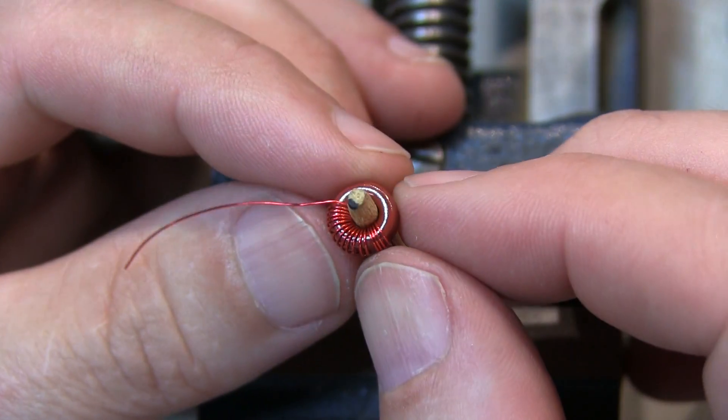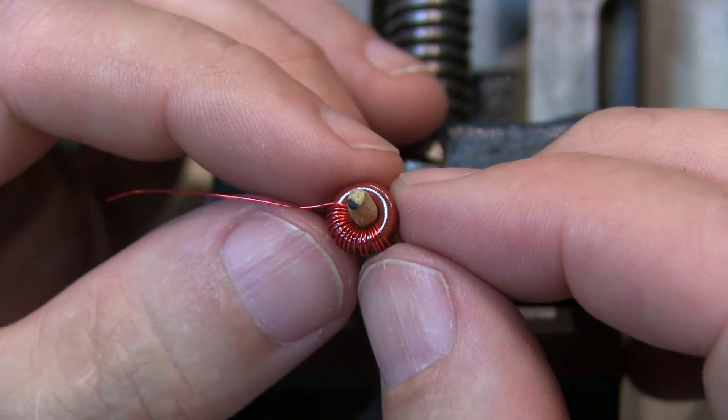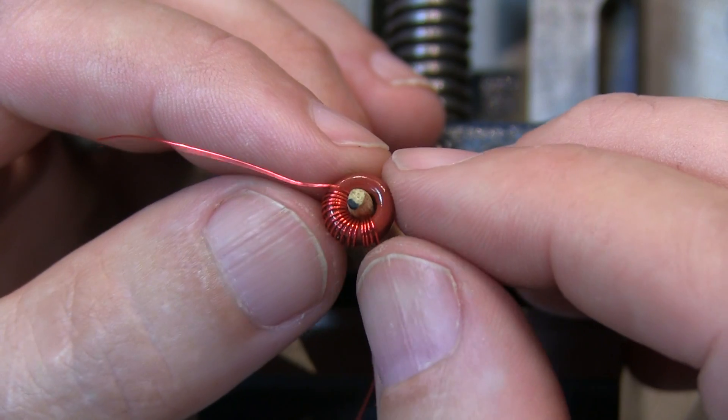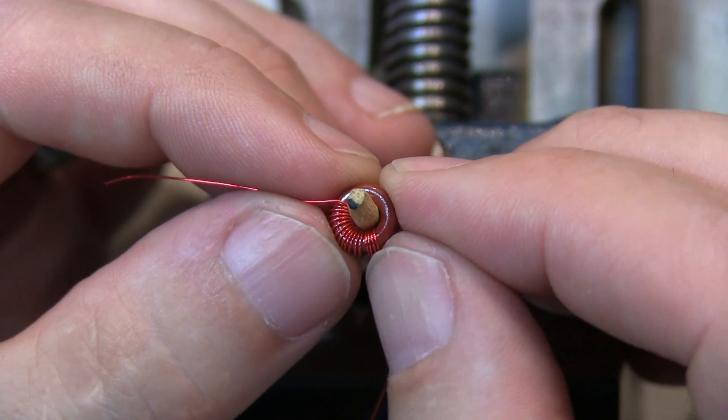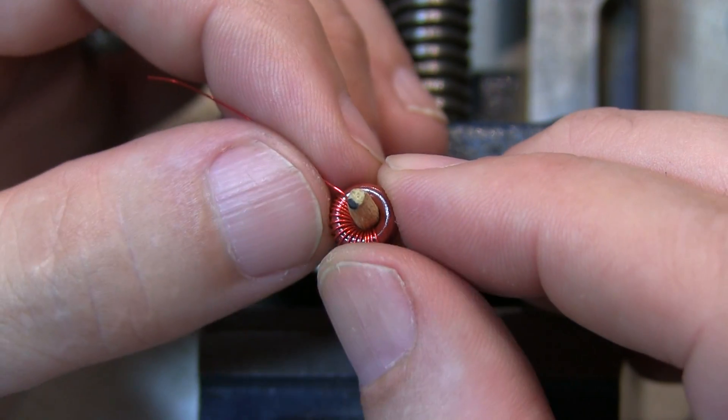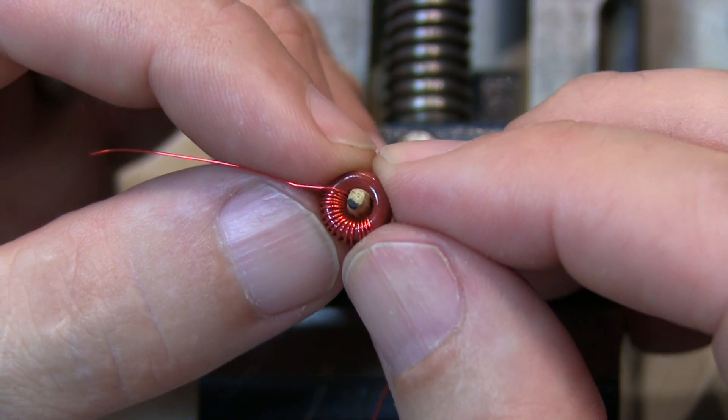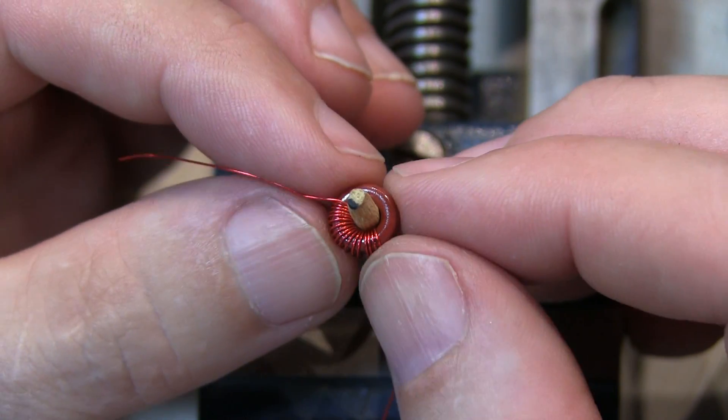So with about half the turns on here, I've got about 17 turns on here now of the 35 I need to wind, it's a good time to take a look at what you've got, make sure they're relatively evenly spaced, nothing's overlapping and once you're satisfied with that you can continue on.